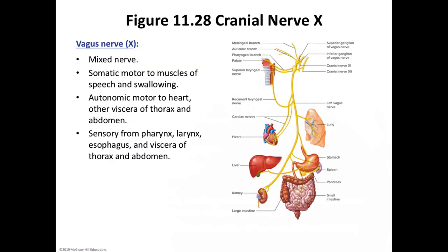Cranial nerve number ten is the vagus nerve. Please review the earlier lecture in chapter 11 for more on the vagus nerves. To summarize: they originate in the medulla oblongata, descend into the neck, chest, and abdomen. They are mixed nerves with both somatic and autonomic branches, with the autonomic fibers being predominant. Please review that lecture because you have a number of test questions on the vagus nerve.